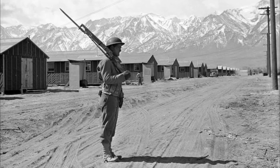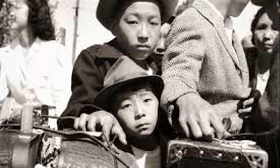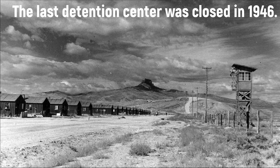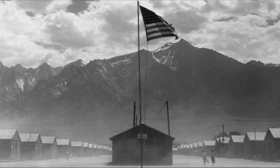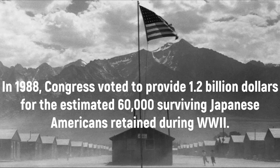Any appeals to the Supreme Court did nothing. By 1943 it was agreed that if individual Nisei would pledge their loyalty to the U.S. and find a job away from the west coast, they could be set free. About 35,000 Japanese Americans left the camps during the next two years, including more than 13,000 who joined the armed forces. More than 5,000 Japanese Americans renounced their American citizenship and chose to live in Japan at the war's end. The government did not close down the last detention center until 1946. There was no massive torture or extermination of any Japanese Americans in these concentration camps, but the treatment and conditions were extremely disgraceful. In 1988, Congress voted to provide 1.2 billion dollars for the estimated 60,000 surviving Japanese Americans detained during World War II.